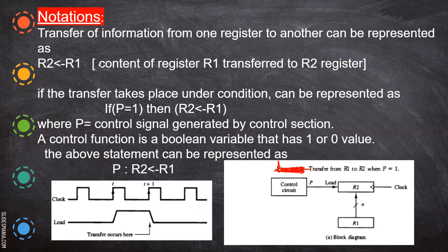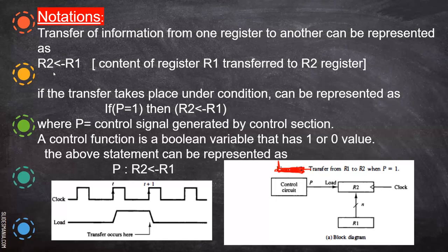The transfer of information from one register to another register can be represented with an arrow: R2 ← R1. This means the movement of data from R1 to R2. While moving, only the value in R2 changes — R1 remains unchanged. That is the transfer of data from R1 to R2; the data from R1 is copied into R2, but R1 remains unchanged.